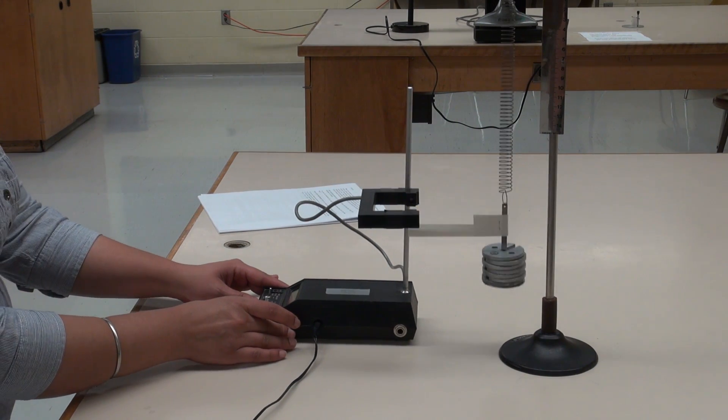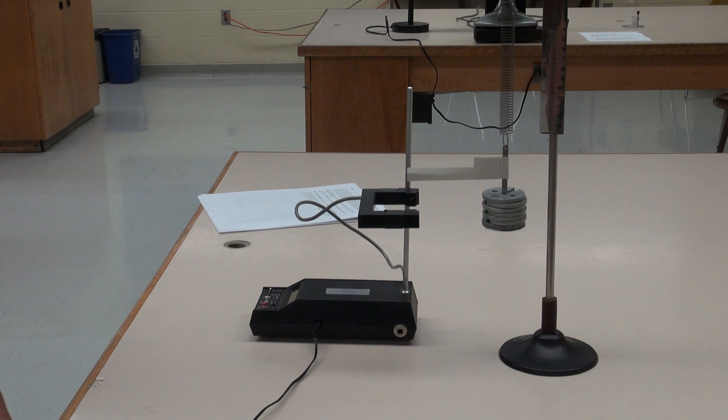When the system is oscillating vertically, slide the photo gate into place, press and release the red reset button.